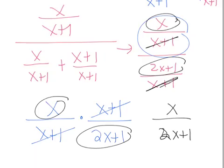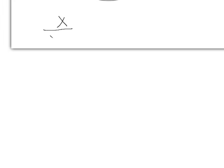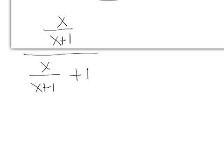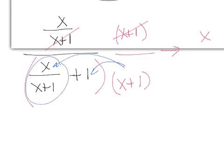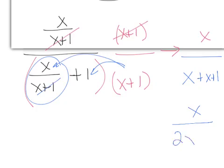Now solving using Method 2: we rewrite it as x over x plus 1, all over x over x plus 1 plus 1. The LCD is just x plus 1. We multiply by x plus 1 over x plus 1, remembering to distribute. Up top, the x plus 1 factors cancel, leaving just x. In the bottom, distributing to the first term cancels the x plus 1, leaving x; distributing to the 1 gives x plus 1. So the denominator becomes x plus x plus 1, which is 2x plus 1. The final answer is x over 2x plus 1 — the same answer as Method 1.